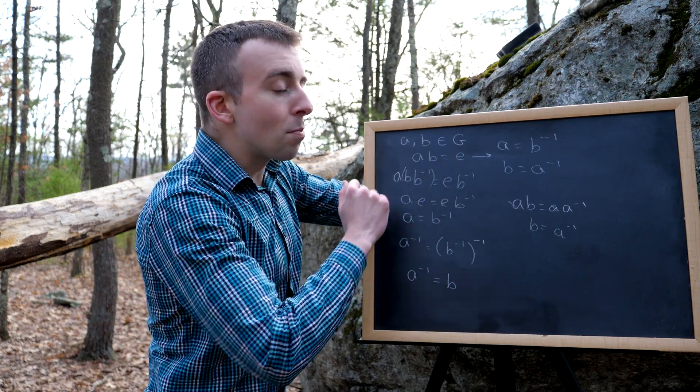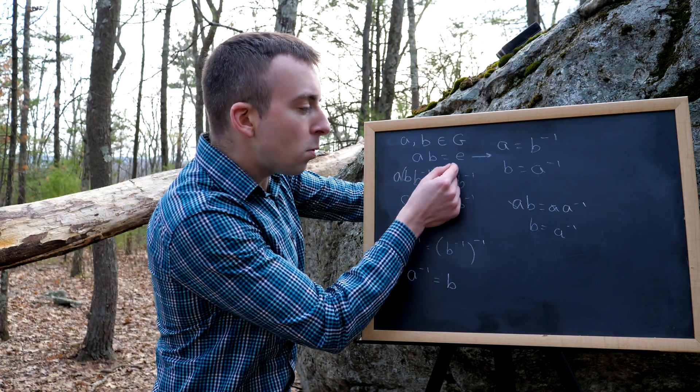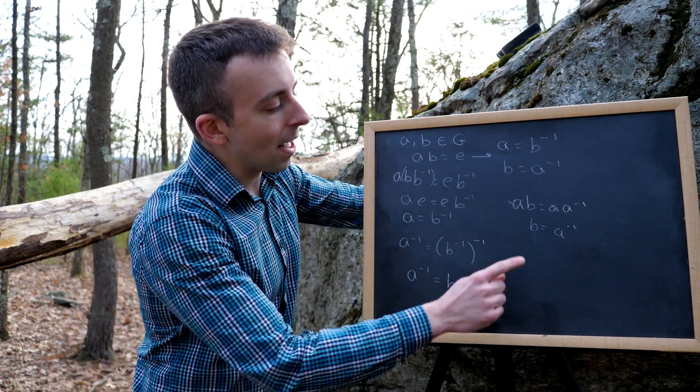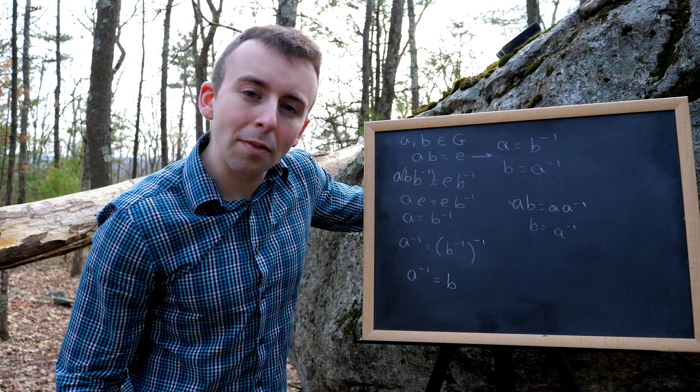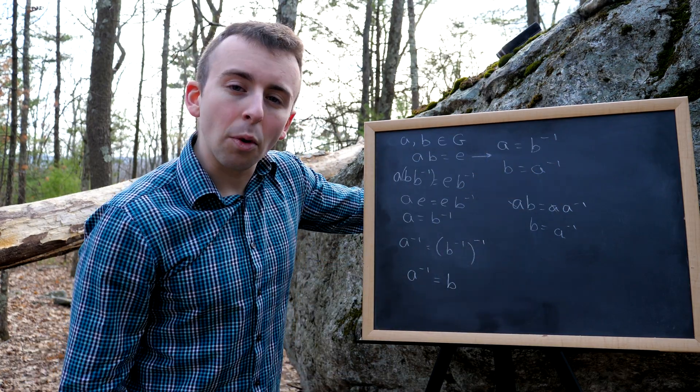So that's how you prove that if two group elements, A and B, compose to produce the identity element, then they are inverses of each other. A is the inverse of B, B is the inverse of A. I hope that helps, and thanks for watching.